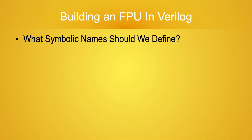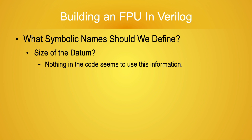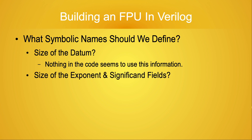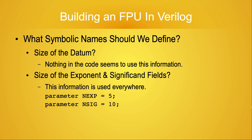What parameters should we use? One's first inclination might be to define a parameter which specifies the number of bits in the floating-point value. But before defining any parameters, let's think about what it is we're operating on. Floating-point numbers break down into three fields: the sign bit, the exponent field, and the significand field. The sign bit is always a single bit, so we probably don't need a parameter to represent its size. The exponent and significand fields do change depending upon whether we're operating on 16, 32, 64, or 128-bit operands. If we create parameters for the number of exponent bits and the number of significand bits, we can compute the number of bits in our floating-point value from these parameters.